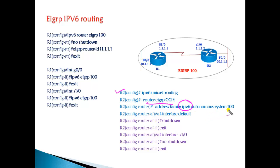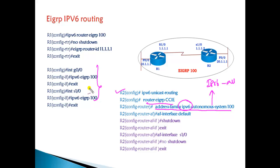Once you add the 'address family ipv6' command in name mode, it automatically enables IPv6 EIGRP on all interfaces. So we don't need to go to each individual interface to enable it. The command 'address family ipv6 autonomous-system 100' enables it globally across all interfaces.